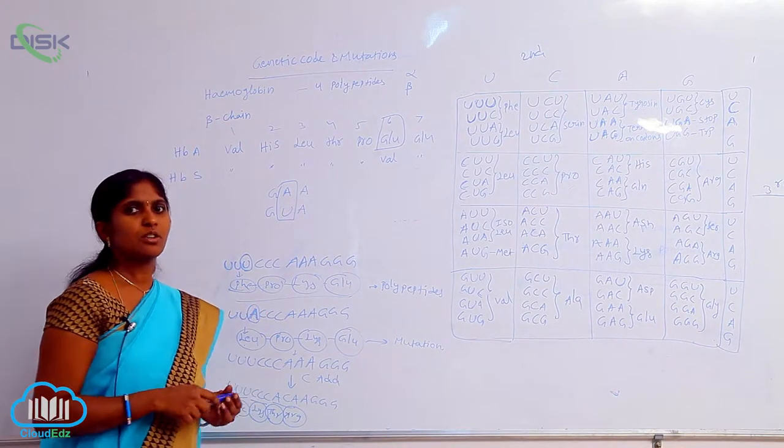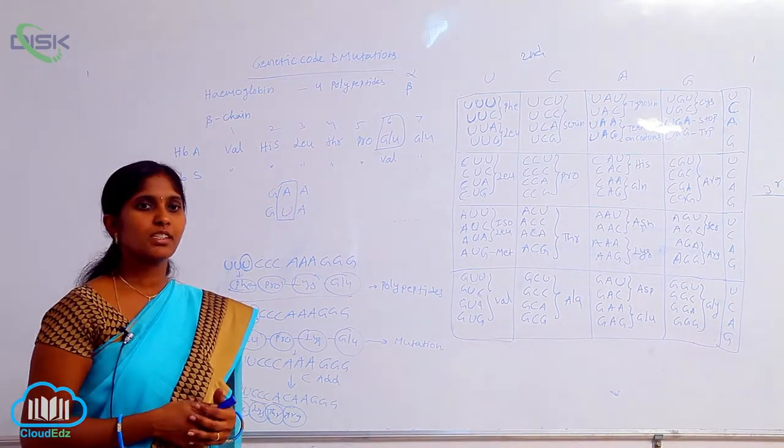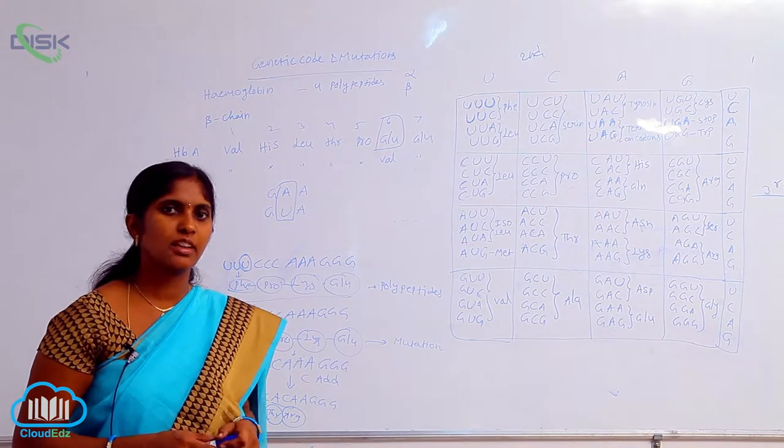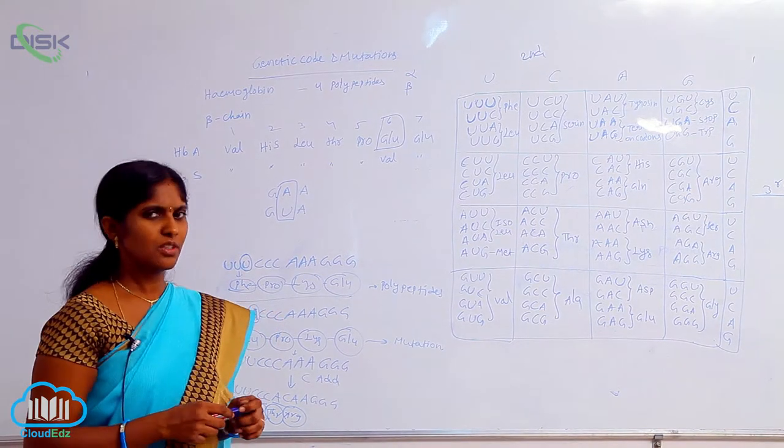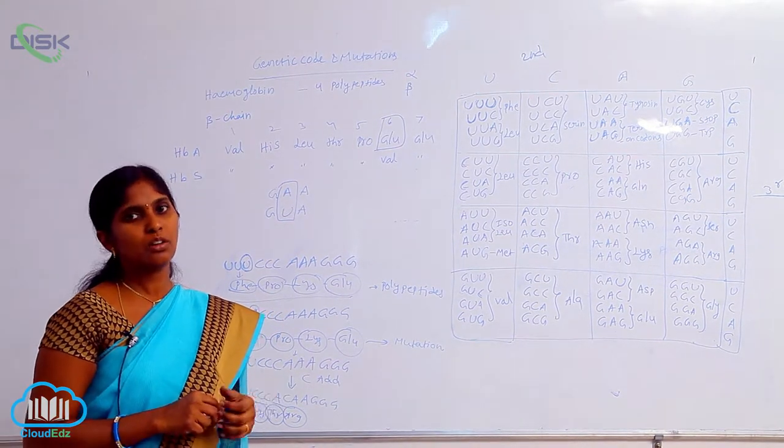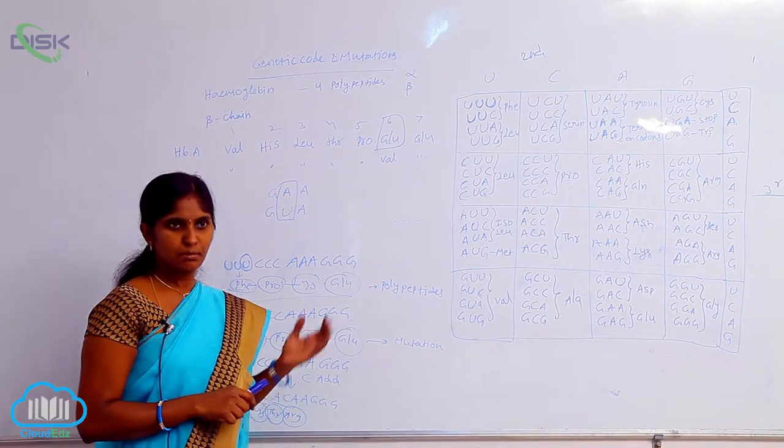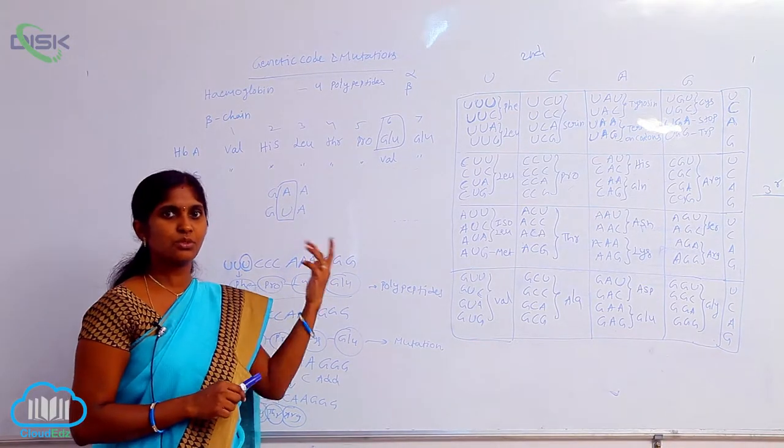In human beings, this causes anemia - sickle cell anemia. How is sickle cell anemia disease caused? This is the best example for the alteration of base pairs. The alteration of genetic code leads to mutation.